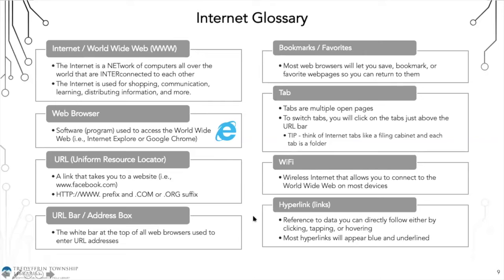Tabs are multiple open pages on one web browser. Think of tabs like a filing cabinet — each tab is a folder in a drawer. All of your tabs appear at the top just above the URL bar, and you click the one you want to switch to. Wi-Fi is wireless internet that allows you to connect to the World Wide Web on most devices. The library has free Wi-Fi, and most places like McDonald's and Target also offer free Wi-Fi nowadays.